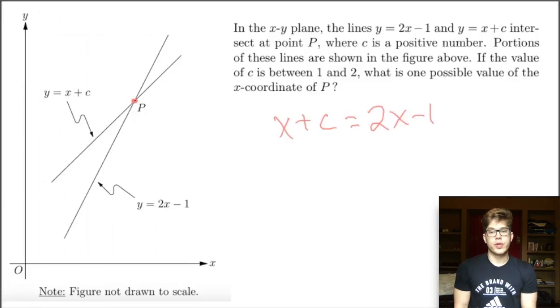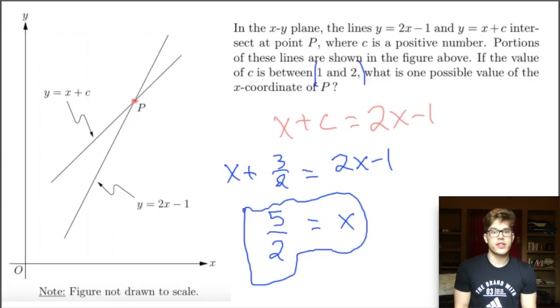So we have x + c equals 2x - 1. And now what do we do? Well, we're told that c is between 1 and 2. So it just goes right in the middle, let's say 1.5. So we have x + 3/2, or 1.5, equals 2x - 1. Let's simplify and solve. If we add 1 to both sides, we'll have 5/2. And then if we subtract x from both sides, we have 5/2 equals x. So this 5/2 is a possible value for x. It looks like if you were to work out all possible values of x, you would get anything between 2 and 3. But this question is just asking for one possible value, so 5/2 is a totally valid answer.